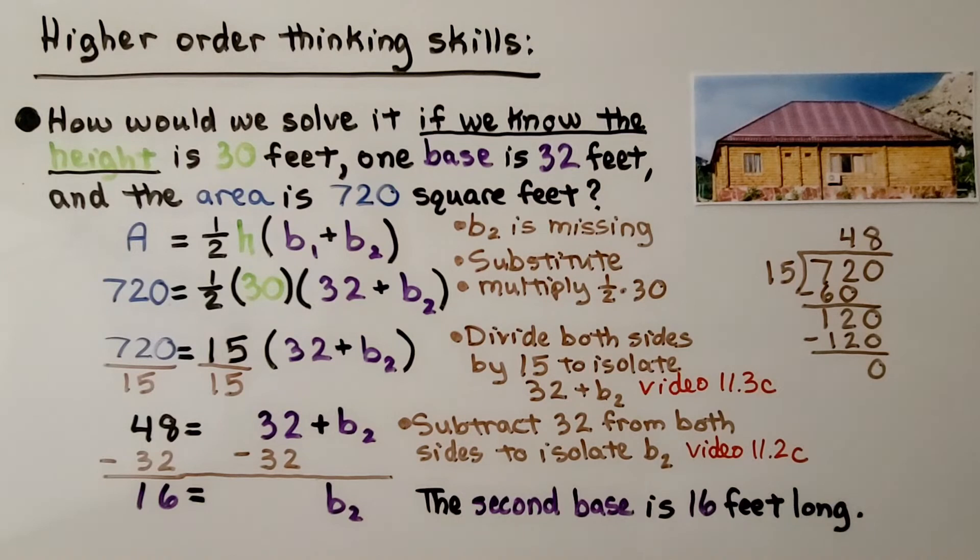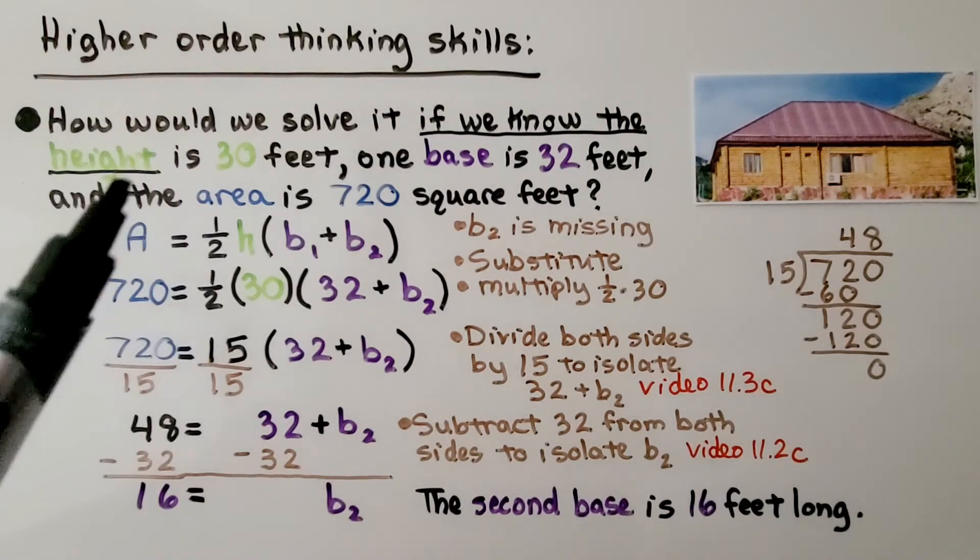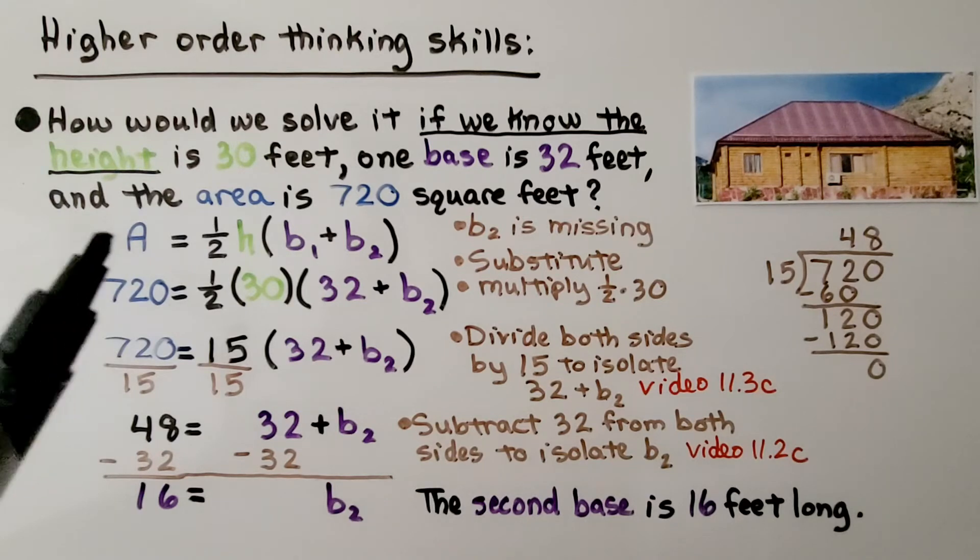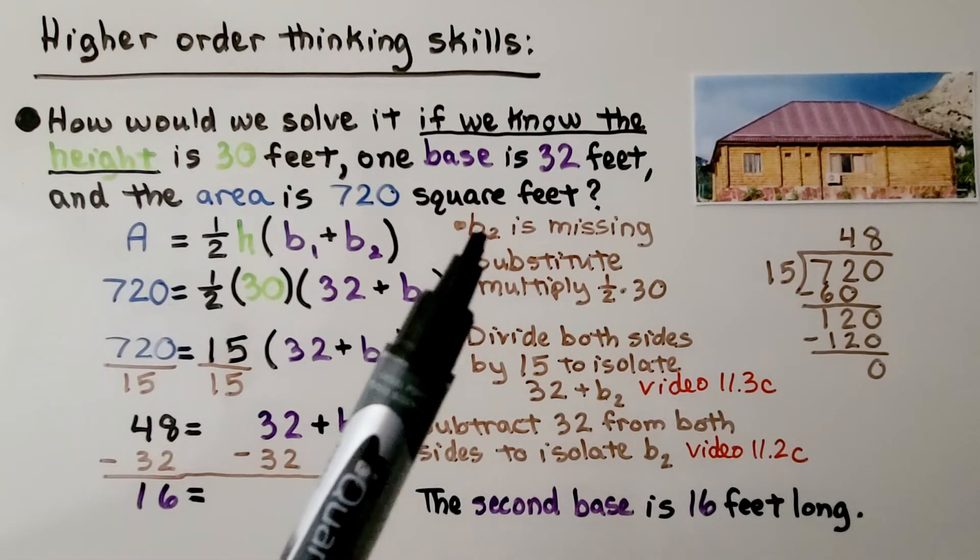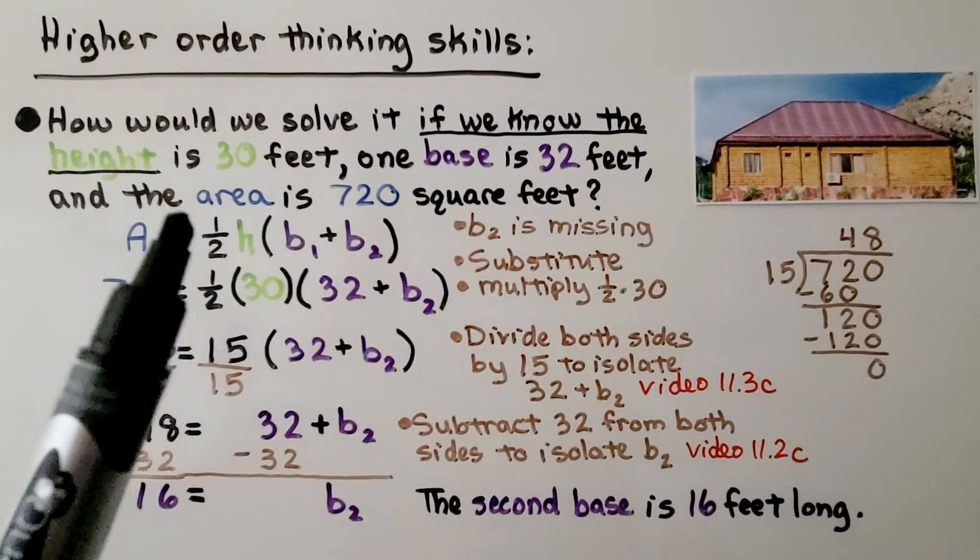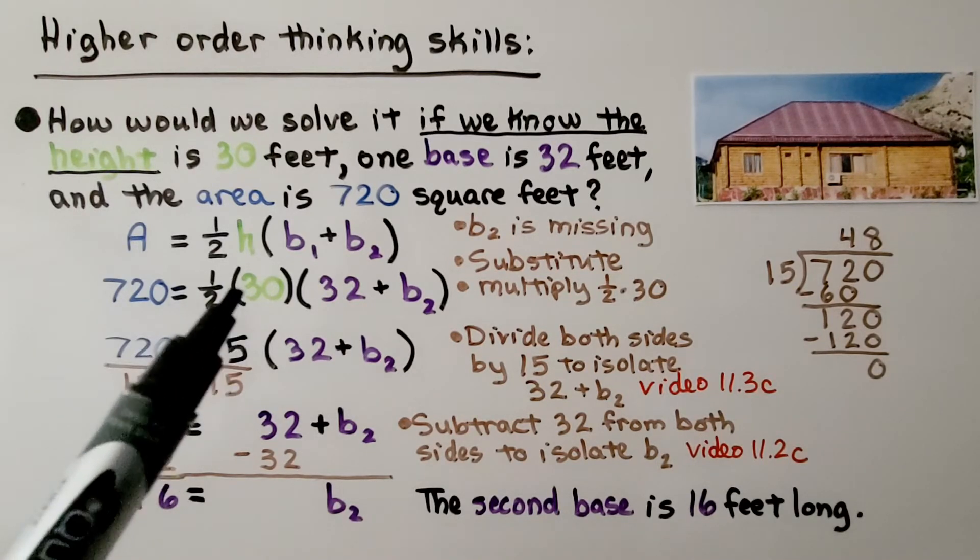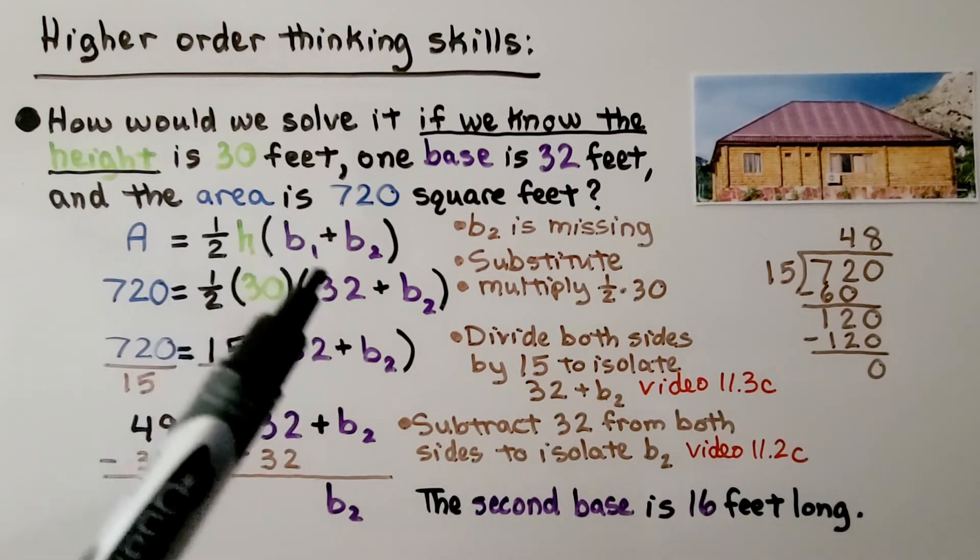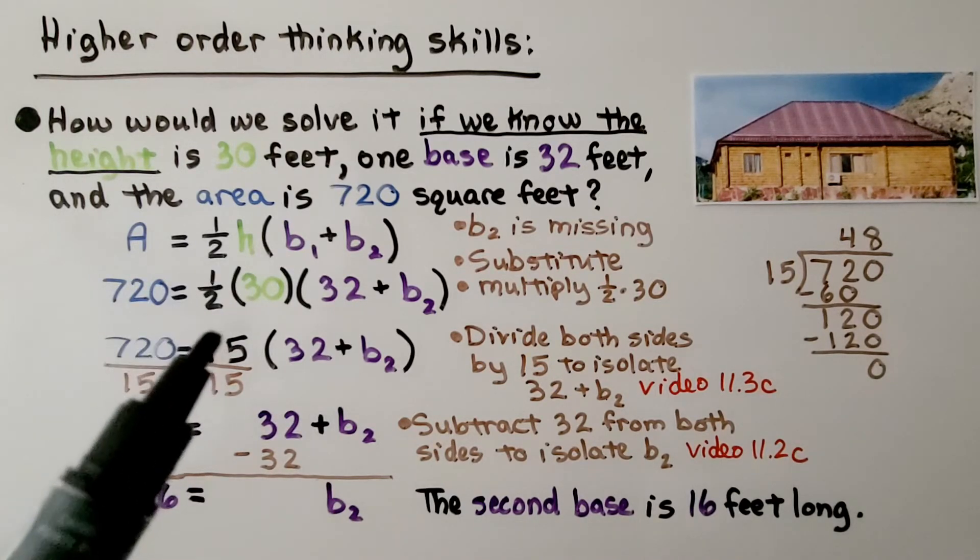Let's try some higher order thinking skills. How would we solve that problem if we know the height is 30 feet and one base is 32 feet and the area is 720 feet, but base 2 is missing? We put in the height into our formula and the one base we do know, and we do half times 30, which is 15.